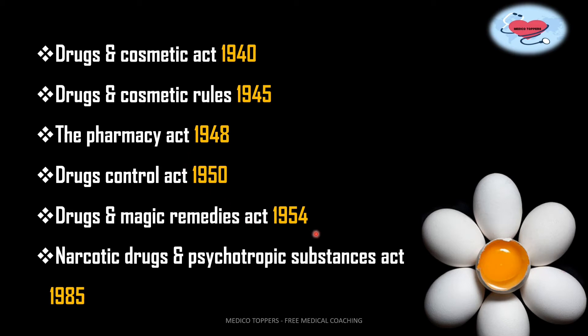Next comes the Drugs and Magic Remedies Act, which came in 1954. The main object of this act is to ban advertisement and to prevent self-medication and treatment which causes harmful effects. The last one is the Narcotic Drugs and Psychotropic Substances Act, year 1985, amended in 1989 and 2001. This act repeals three acts: the Opium Act 1857, the Opium Act 1878, and the Dangerous Drugs Act 1930. As per this act, cultivation of poppy, cannabis and coca plants requires a license.